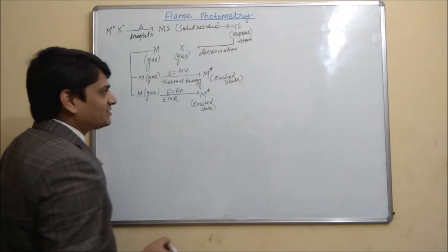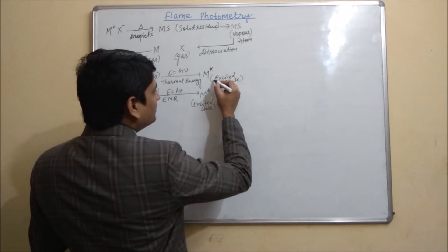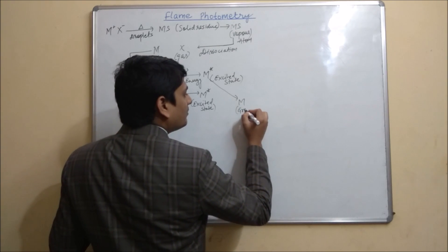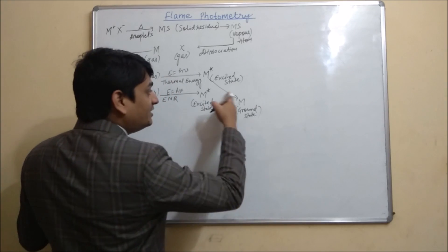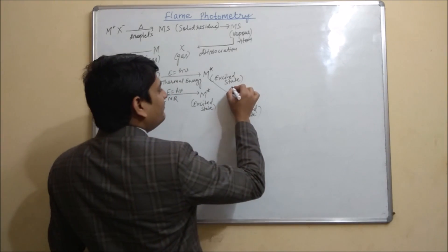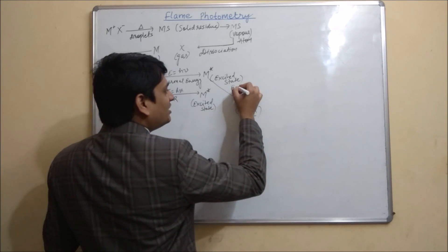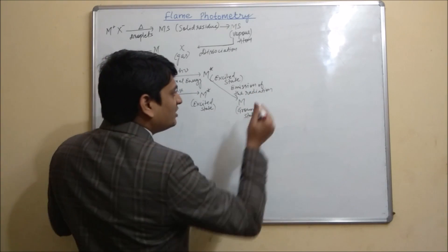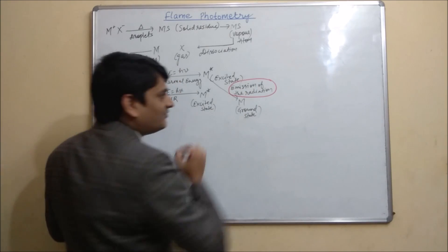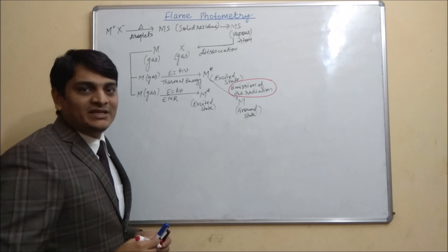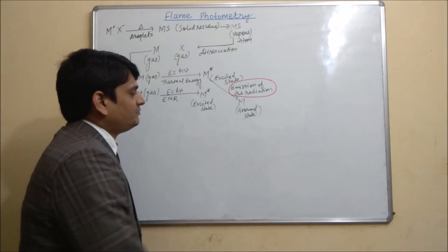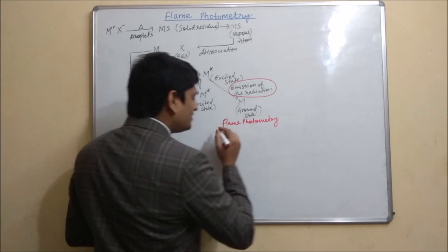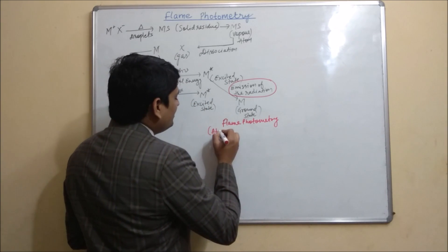After reaching the excited state, the atom will come back to the ground state M. During this return to the ground state, it will emit some radiation. This emission of radiation is our area of interest in flame photometry because the emitted radiation is measured. This method is also known as atomic emission spectroscopy.